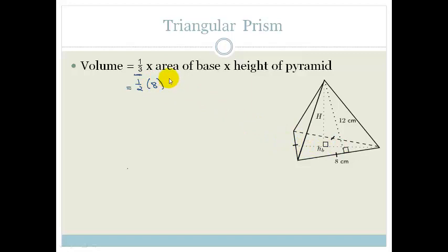half base, times the height, which is hb, times the perpendicular height, which is big H, and remember that is all multiplied by a third, by a third.